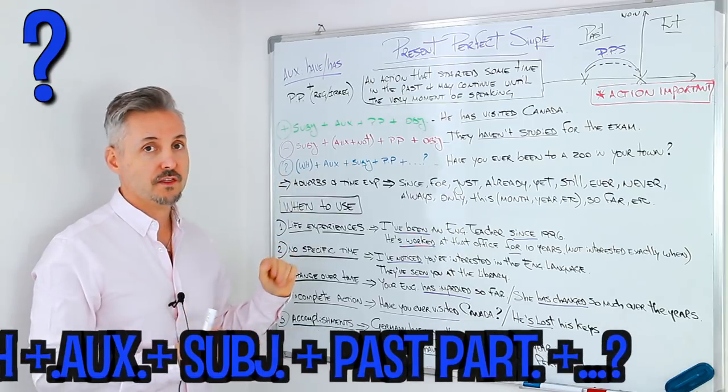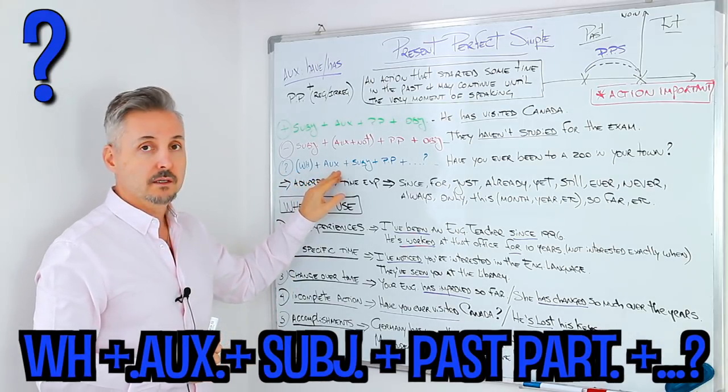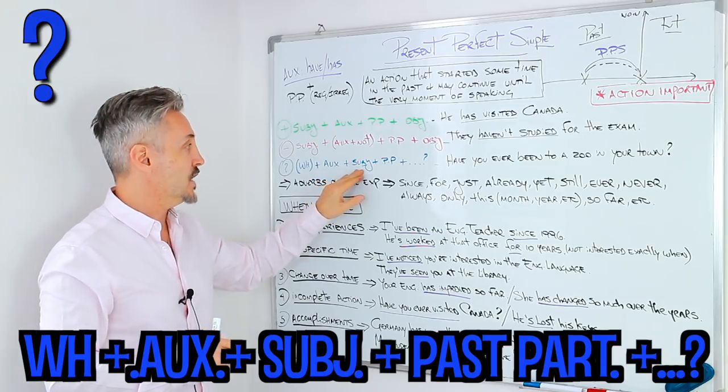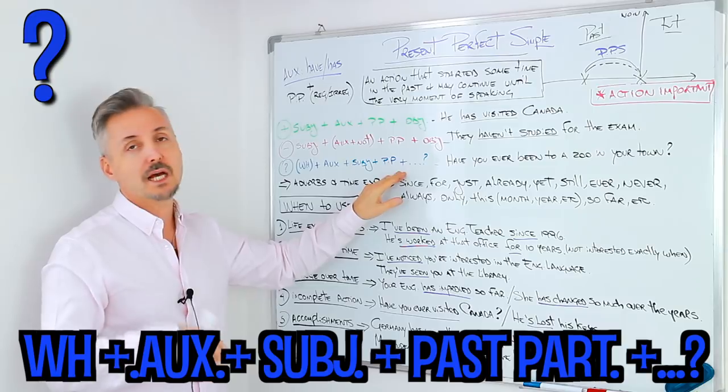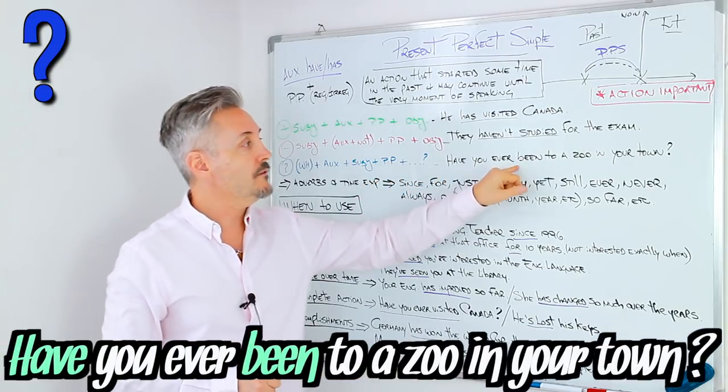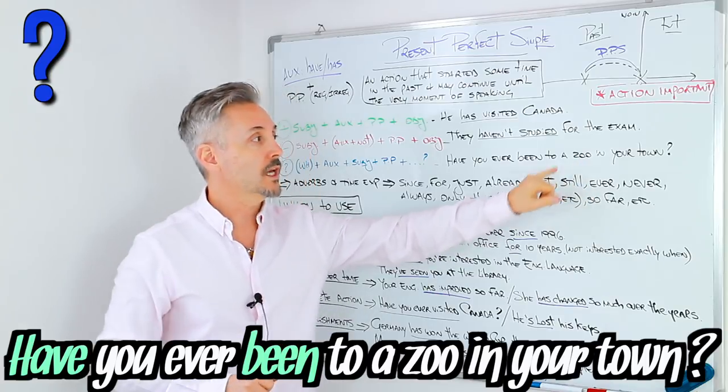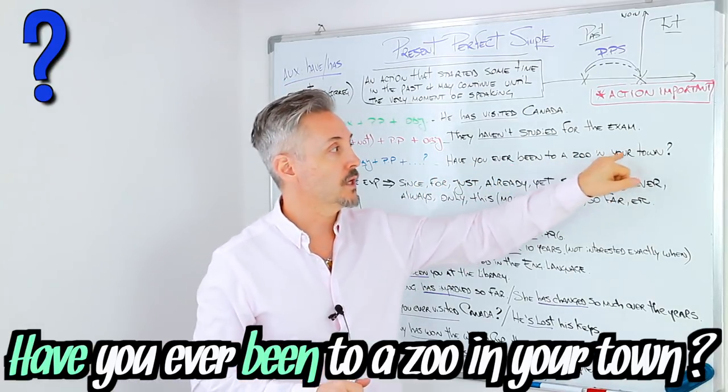For a question then, WH question word plus auxiliary, plus a subject, plus the past participle, plus the time expression. For example, have you ever been to a zoo in your town?